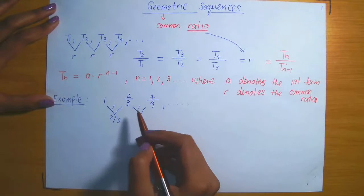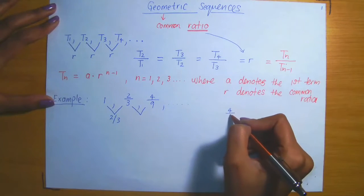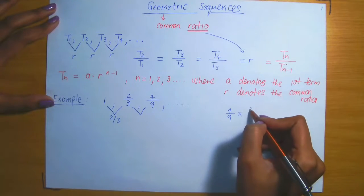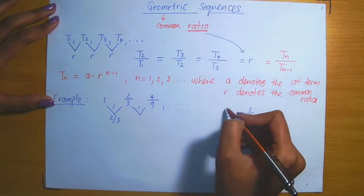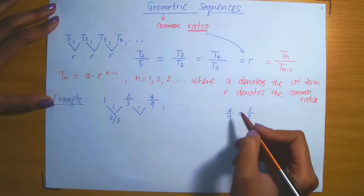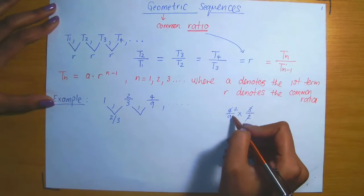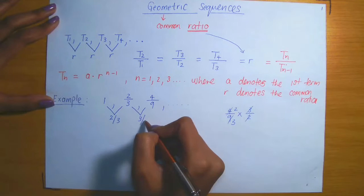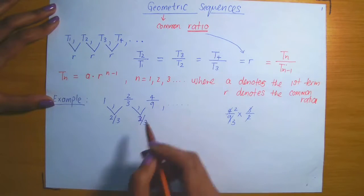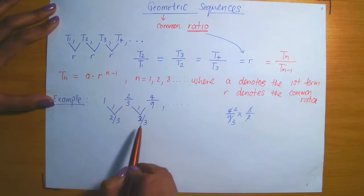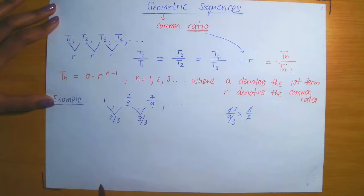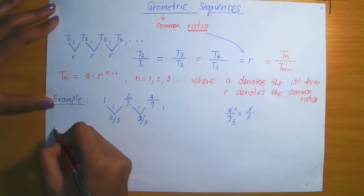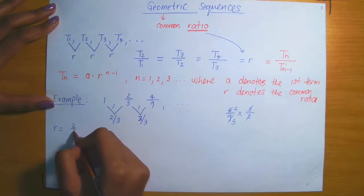Let's consider the next two terms. To determine this ratio, we need 4/9 divided by 2/3. We can invert and multiply, and we're left with 2/3 as well. So 4/9 divided by 2/3 is also 2/3. That means we have a common ratio, so r in this sequence is 2/3.